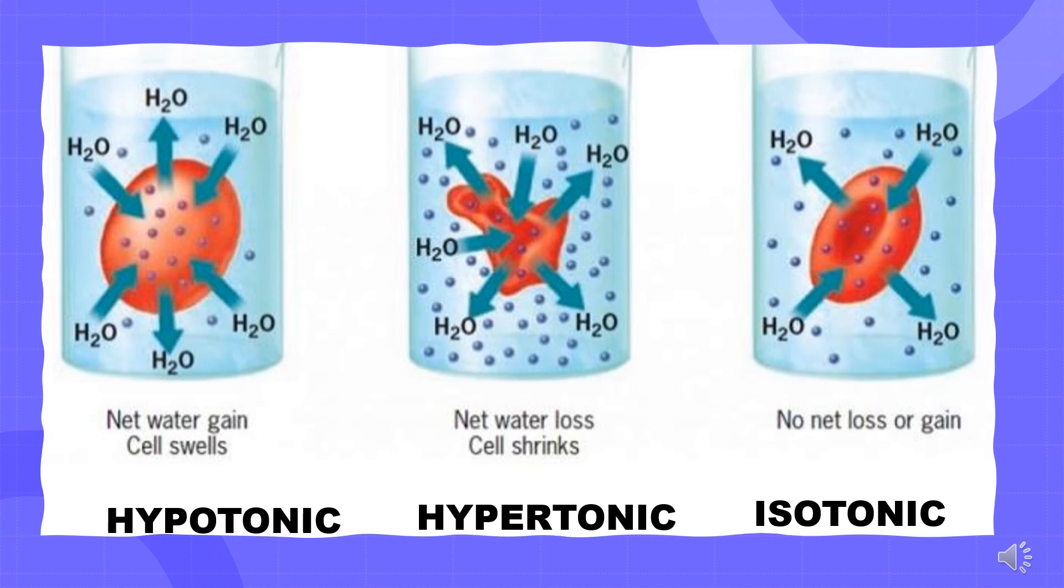Now we come to the conclusion that when a red blood cell is placed in a hypotonic solution, there is net water gain and the cell swells up. When the same cell is placed in a hypertonic solution, there is net water loss and the cell shrinks. Whereas, if the cell is placed in an isotonic solution, there is no net loss or gain.